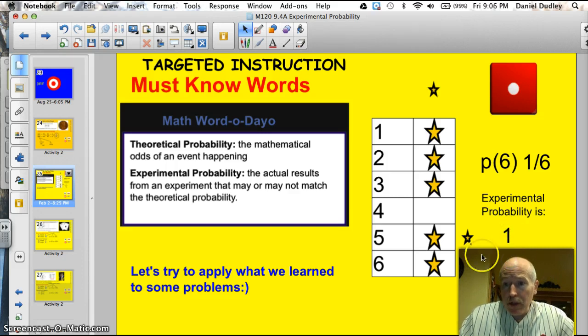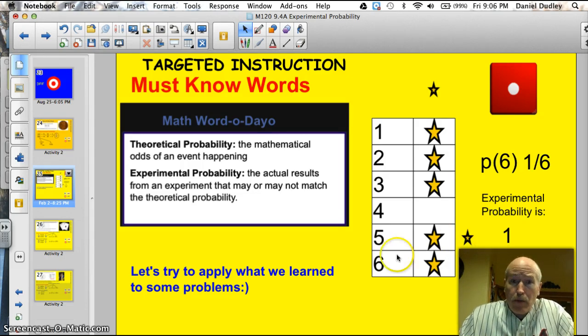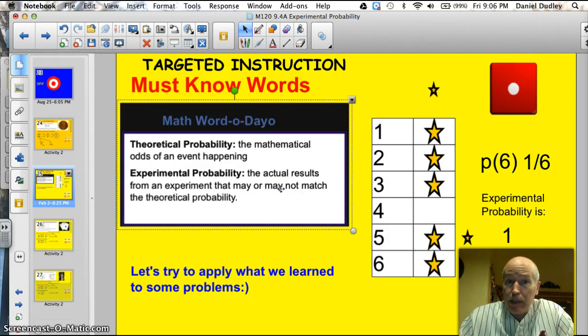So my experimental probability here was 1 out of 6, my theoretical probability was 1 out of 6. They actually matched this time. Did it match for the 5? No, it didn't. Did it match for the 4? No, because I had 0 out of 6 for the 4 and my experimental probability for the 5 was 2 out of 6. It was double what should have happened. So you get an idea of what experimental probability is, this is what actually happens when you do the experiment. And theoretical probability, this is what's supposed to happen mathematically, the odds or the chances. Tonight we're really going to focus hard on both those terms, even though our target talks about experimental probability. You kind of got to understand what's supposed to happen, right? And we've already talked about that a number of times.